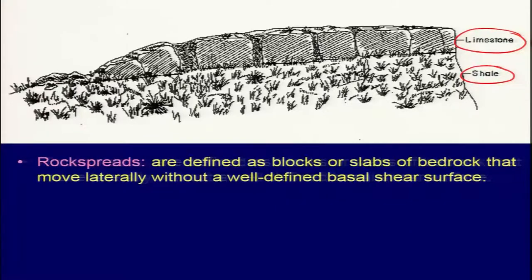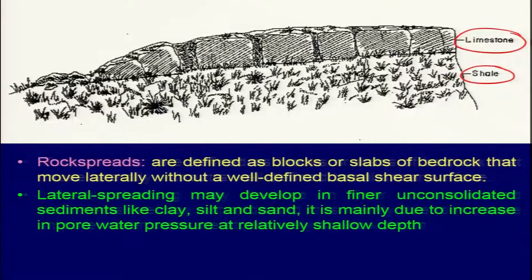Rock spreads are defined as blocks or slabs of bedrock that move laterally without a well-defined basal shear plane or shear surface. Lateral spreading is another term given to this, which may develop in finer unconsolidated sediments like clay, silt, and sand — mainly fine-grained material.